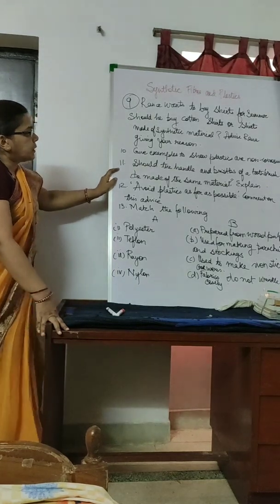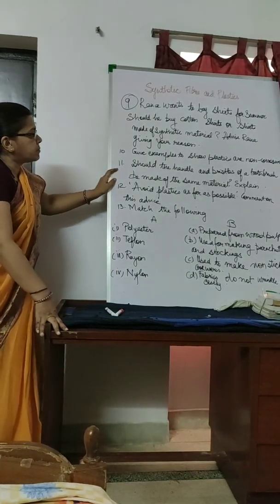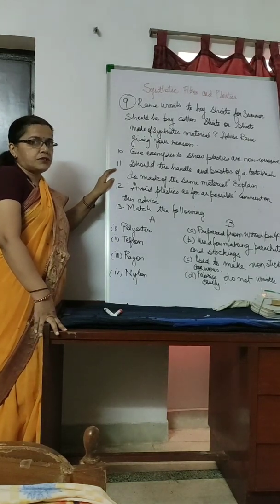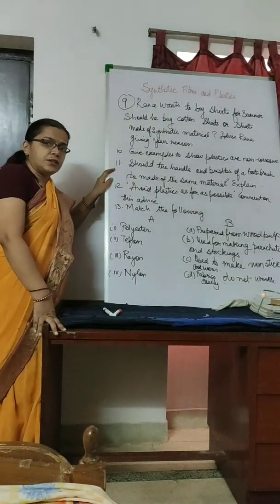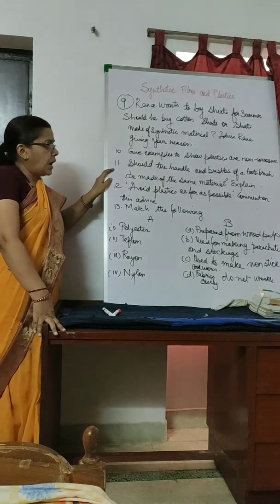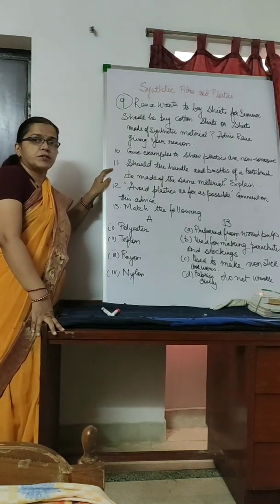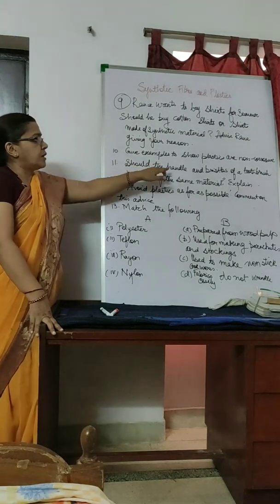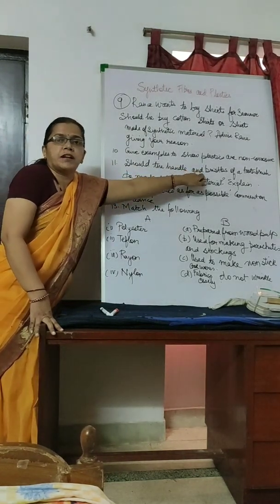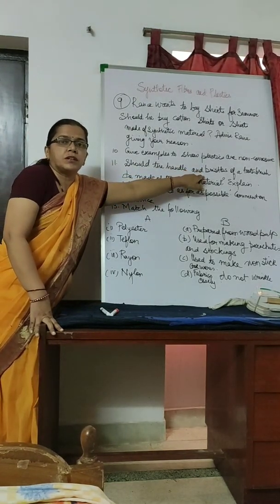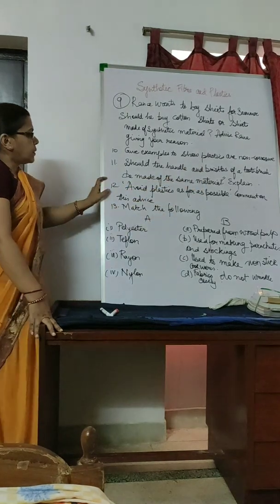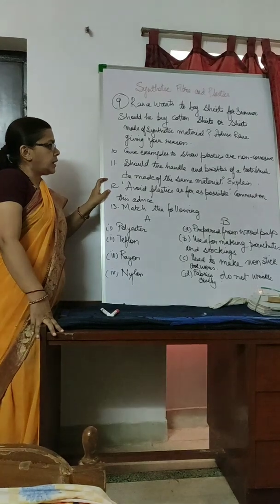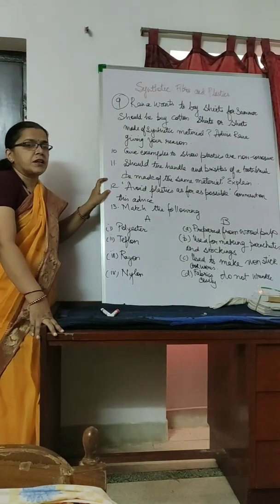Question eleven: Should the handle and bristles of a toothbrush be made of the same material? The handle needs to be strong while the bristles need to be soft and able to bend easily. Therefore, the material used for the handle should be different from that used for the bristles.